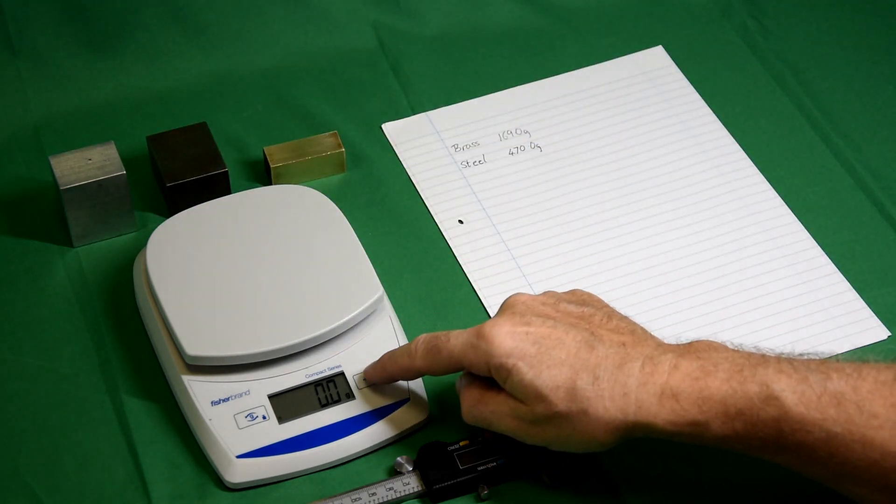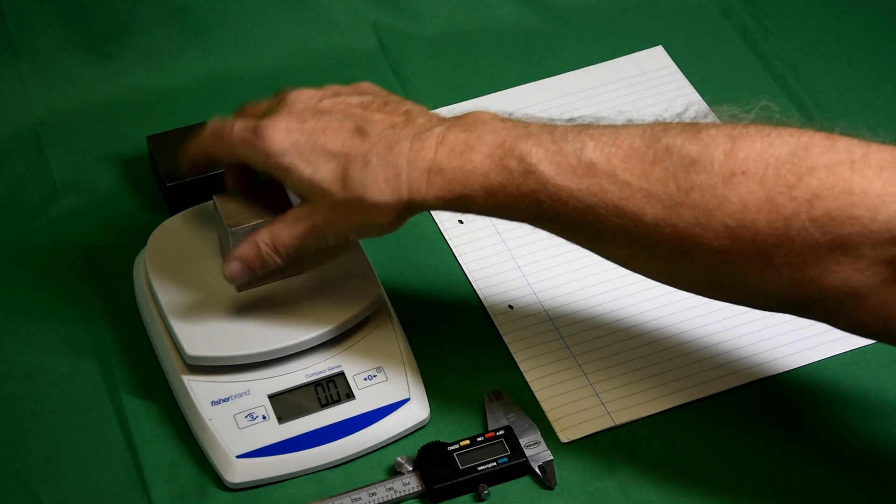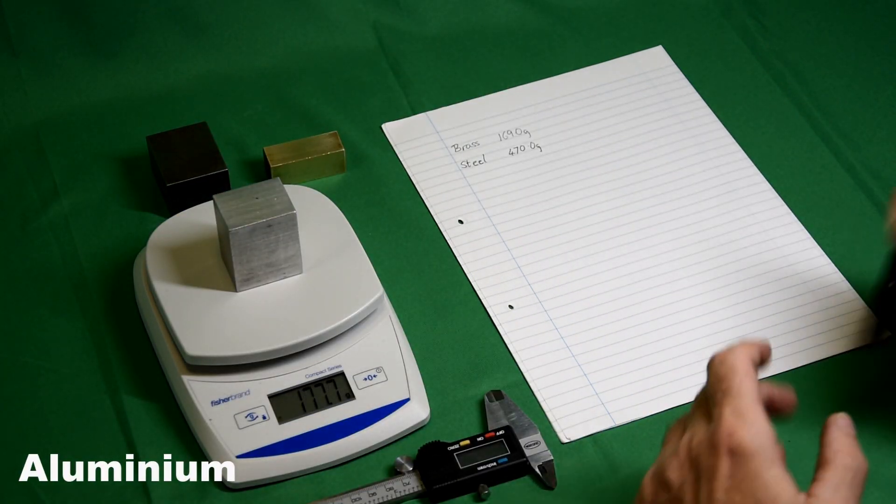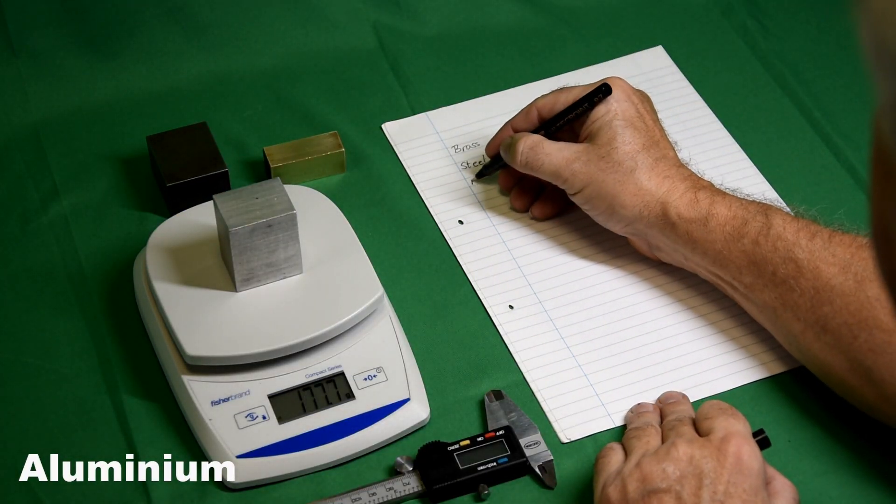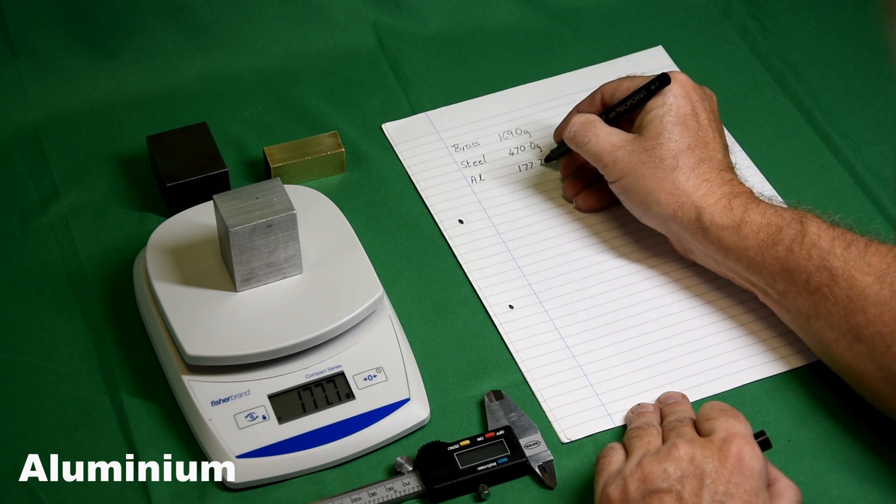Zero-check again. And finally, the aluminium, which has a mass of 177.7 grams.